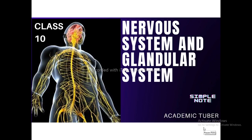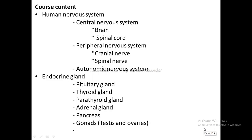Hello everyone, namaste, welcome back to my channel Academic Tuber. Today we are going to discuss Unit 15 from Grade 10 Science, which is Human Nervous and Glandular System. In this unit we are going to discuss the human nervous system, central nervous system, peripheral nervous system, autonomic nervous system, and endocrine glands including pituitary gland, thyroid gland, parathyroid gland, adrenal gland, pancreas, and gonads.